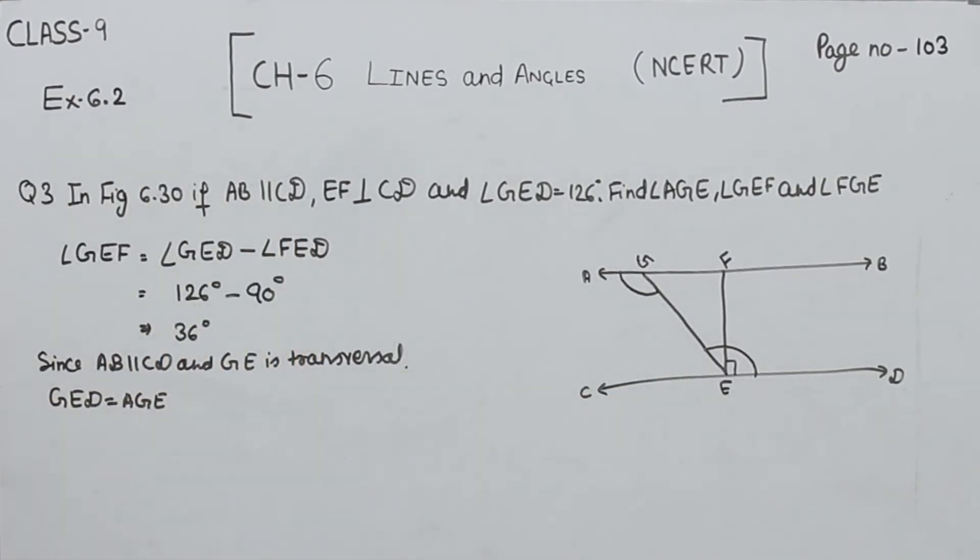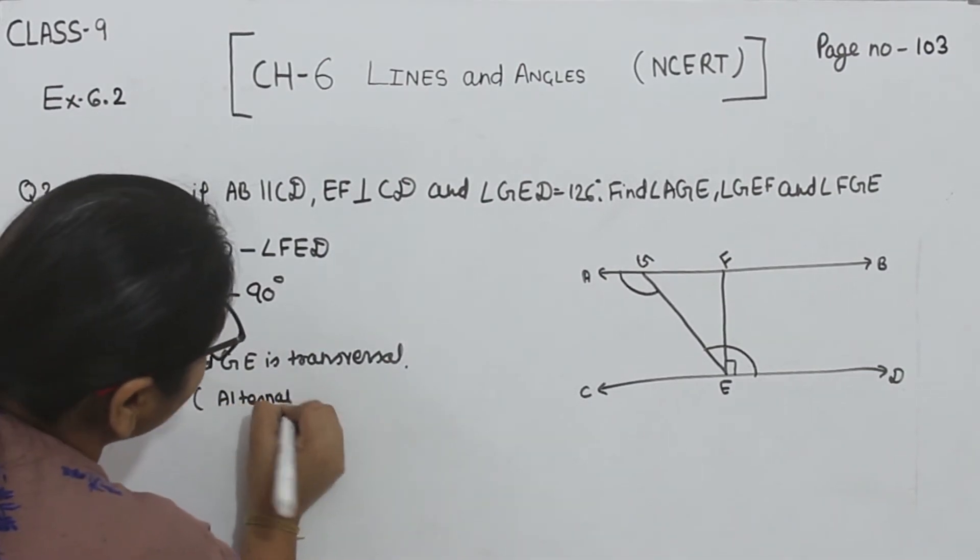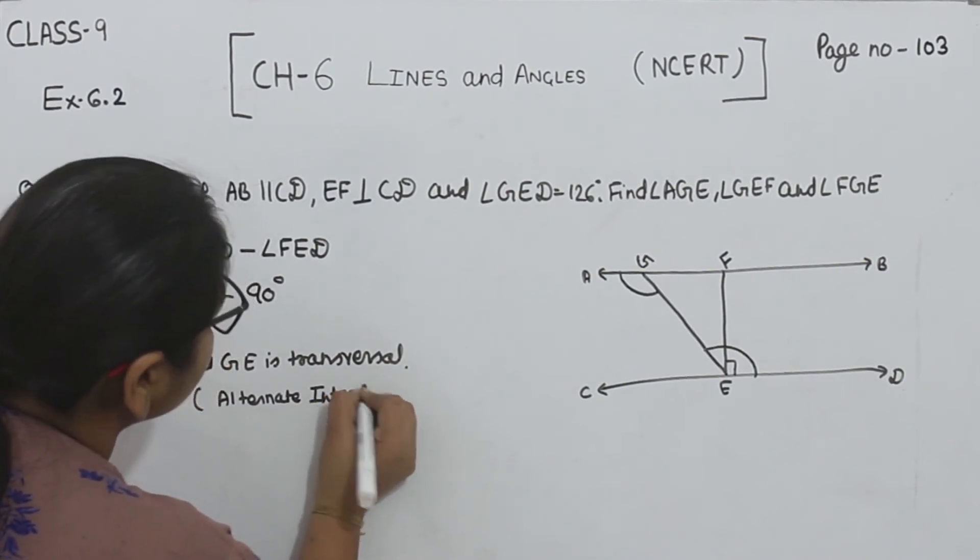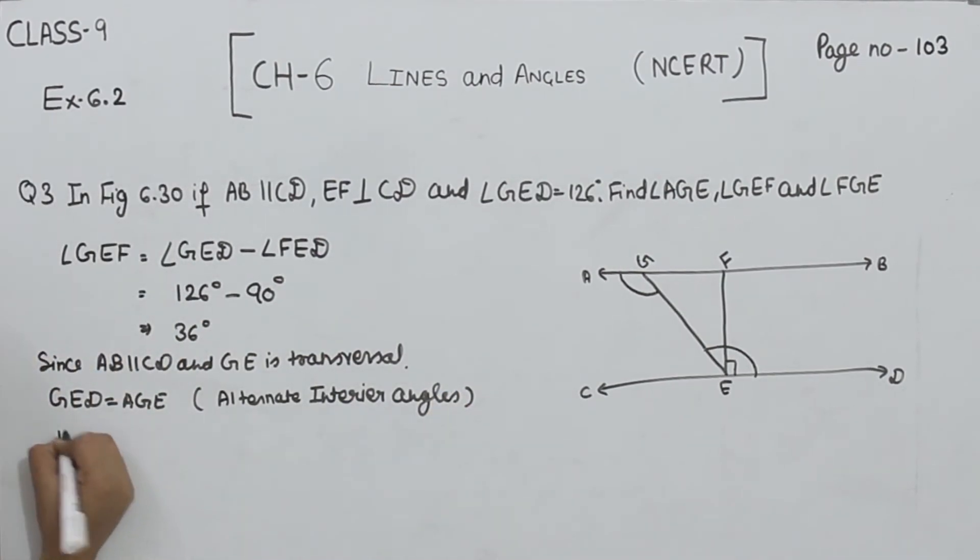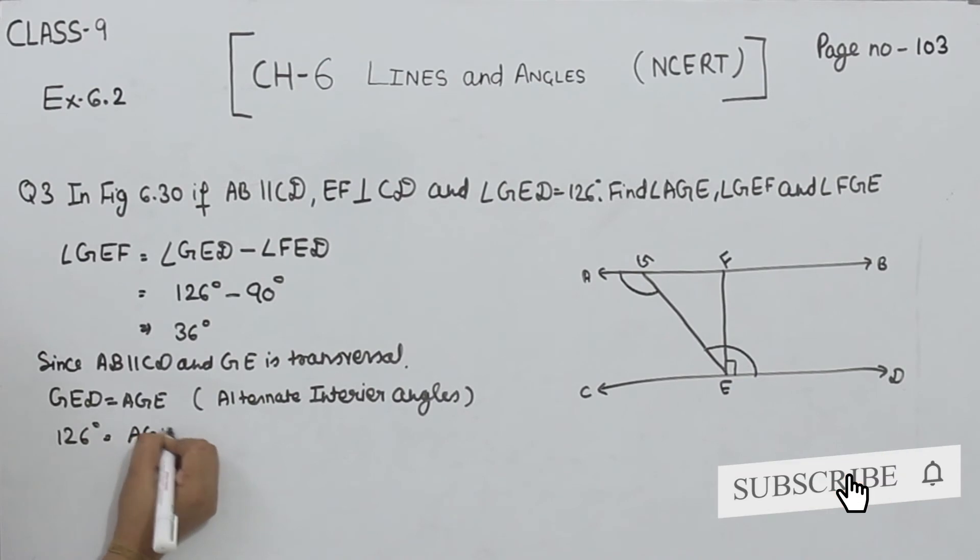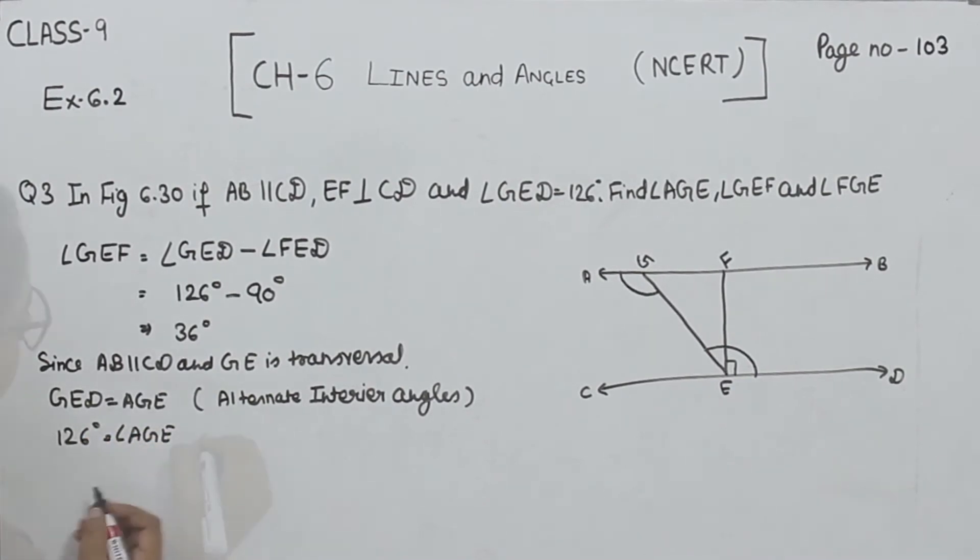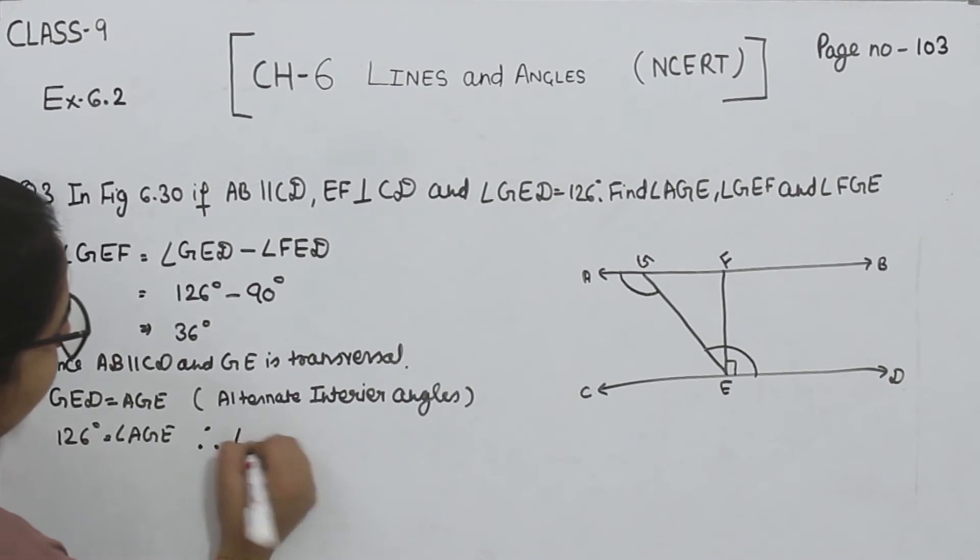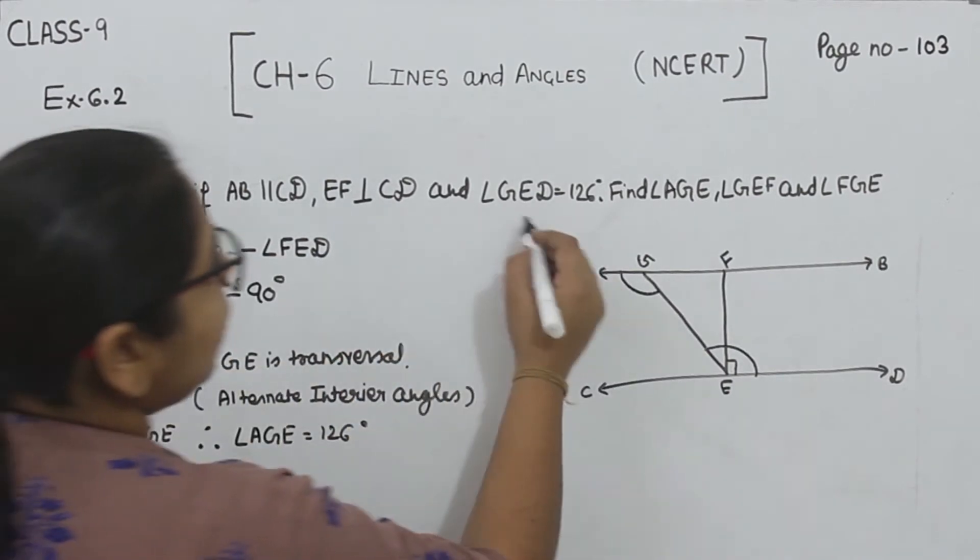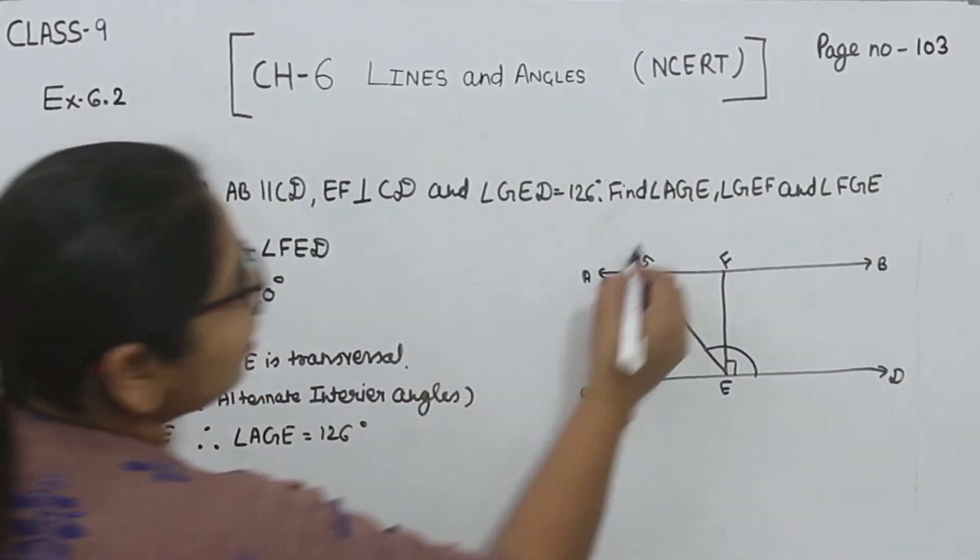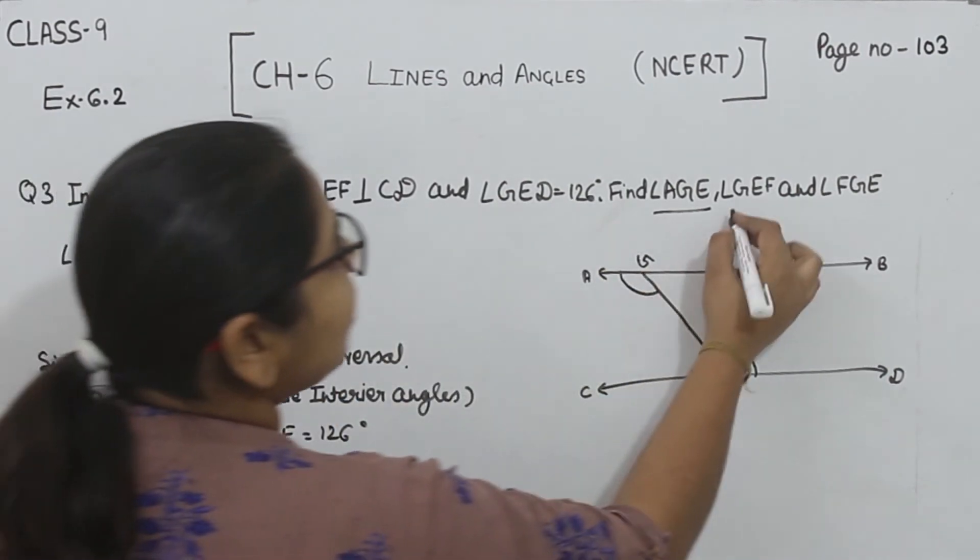This one is equal to this one. They are alternate interior angles. So angle GED is 126, so angle AGE is also 126 degrees. So we have found AGE and angle GEF. Now we have to find out angle FGE.